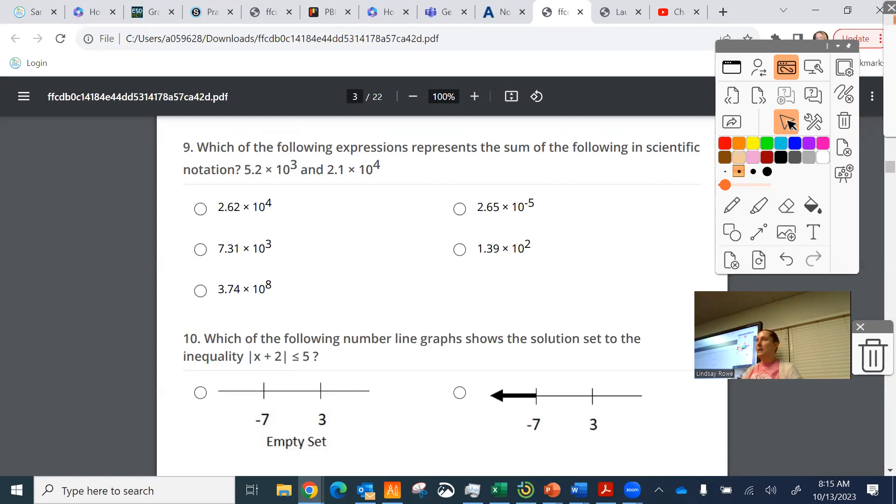If you don't remember scientific notation, you can use your calculator for this, kiddos. You could literally put in your calculator 5.2 times 10 to the third plus 2.1 times 10 to the fourth. It's going to give you an answer, not in scientific notation, but it'll give you an answer of 26,200, and then you just have to find the one. Well, only one of them has that at the beginning. That's one way to do it.